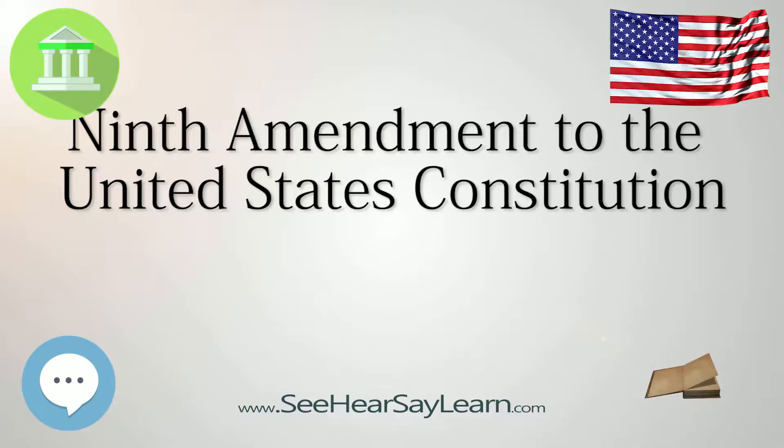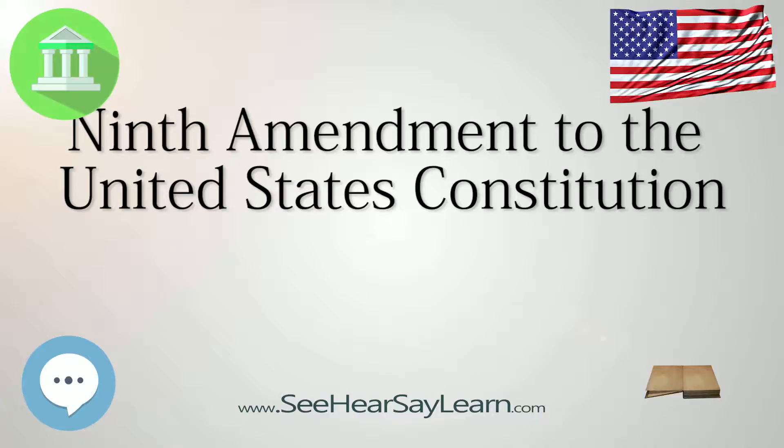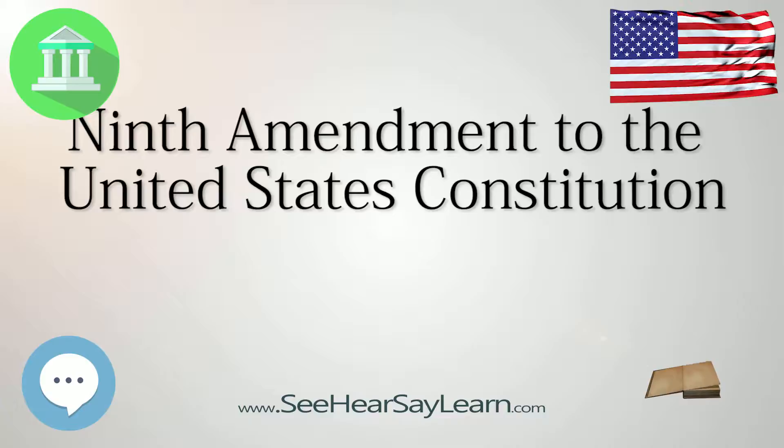The Supreme Court held in Barron v. Baltimore, 1833, that the Bill of Rights was enforceable by the federal courts only against the federal government, and not against the states. Thus, the Ninth Amendment originally applied only to the federal government, which is a government of enumerated powers.